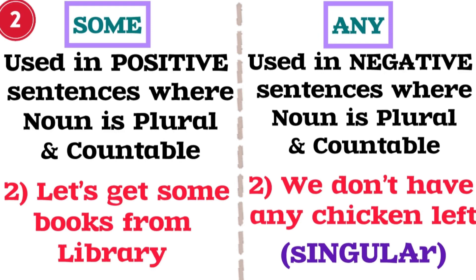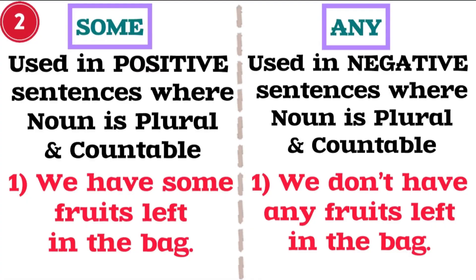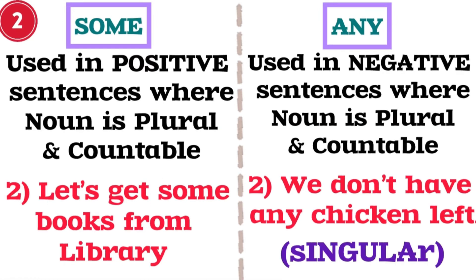Now Rule 2 for 'any': any is used in negative sentences where the noun is plural and countable. For example, 'We don't have any fruits left in the bag' — fruits is plural and countable and the sentence is negative. The next example: 'We don't have any chicken left' — the sentence is negative but the noun 'chicken' is singular and countable.